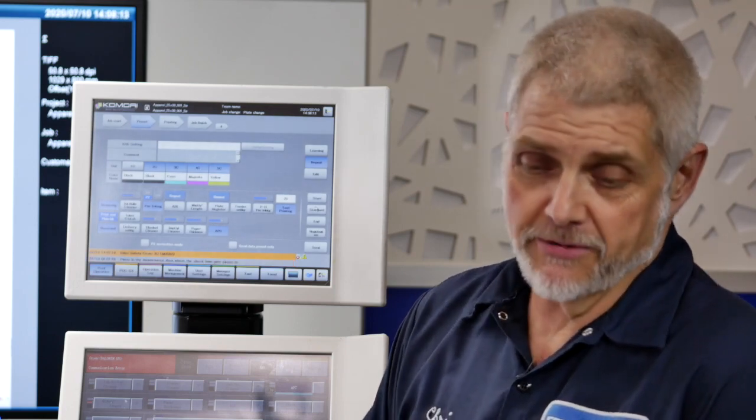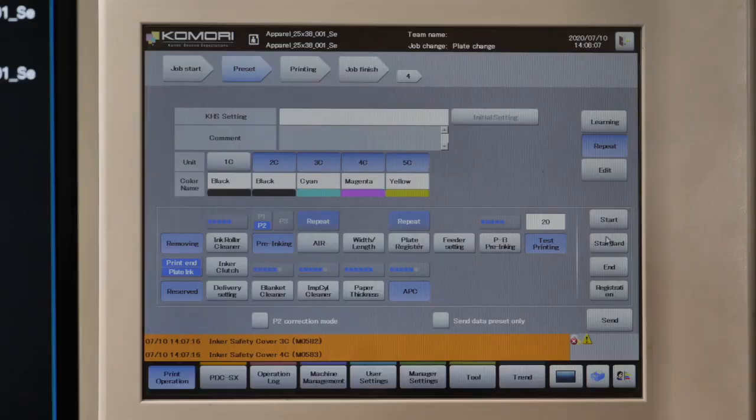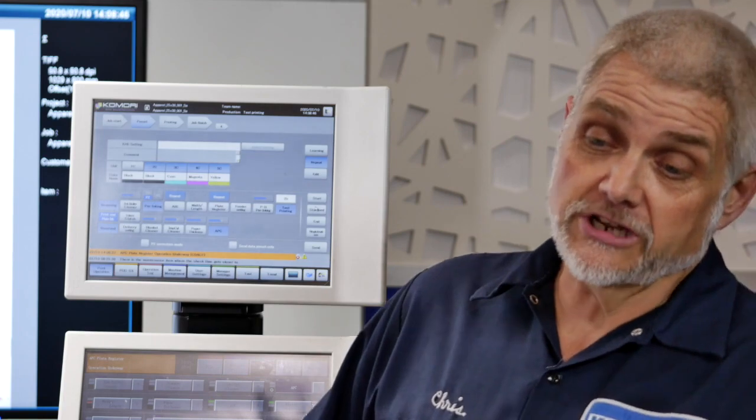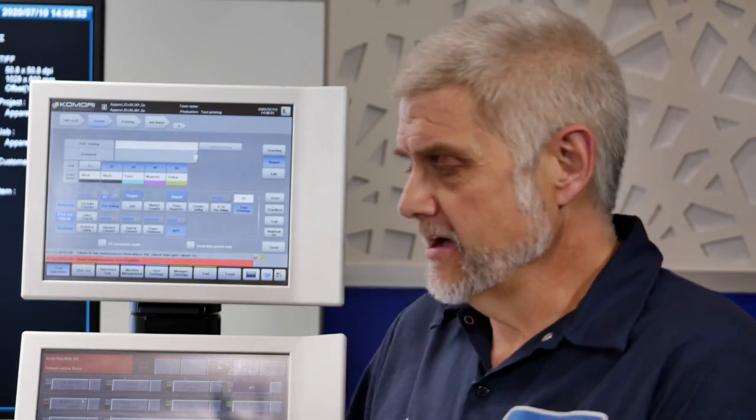I have the right functions happening when I need them to happen. The music stopped, that tells us that the plate change is finished. Now the press is going to start up and run my first 20 sheets. We like to run 20 sheets at Komori because at 20 sheets I can tell how good my ink up program is and whether it needs to be improved or not. I can also check for defects at 20 sheets. I don't have to run 200 to determine that the job has a typo in it.